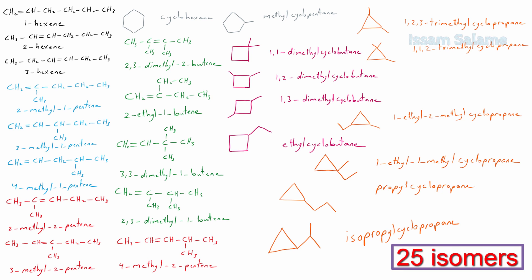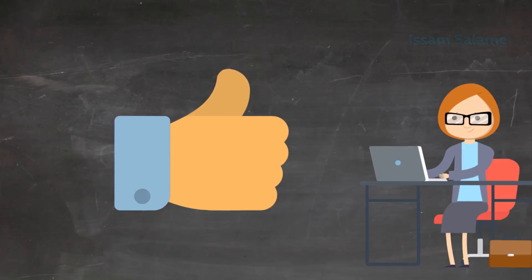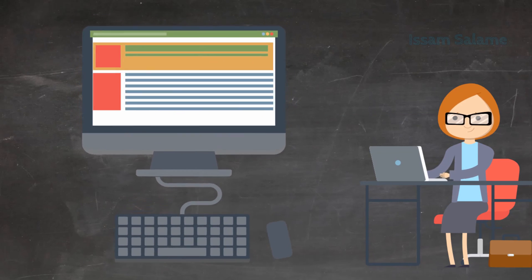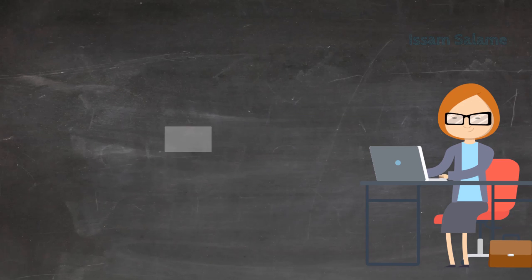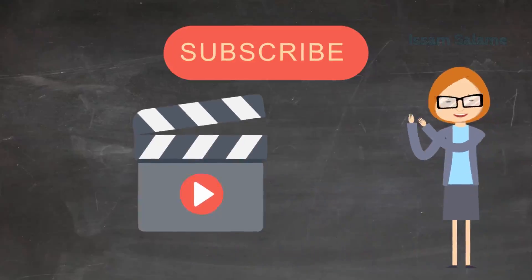So as you can see, we could draw 25 different structural isomers for C6H12. If you find an isomer with a different name that I didn't mention, please write me a comment. If you still find it difficult to differentiate between straight and branched alkenes, or how to name alkenes, alkanes, or draw all possible isomers, please check the description for useful links. Solve the end-of-video questions and put your answers in the comments. Subscribe to my channel to stay tuned for more videos — good luck!